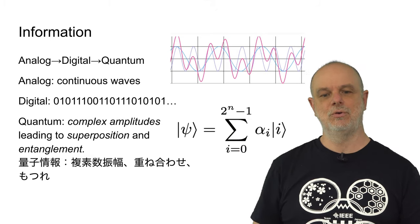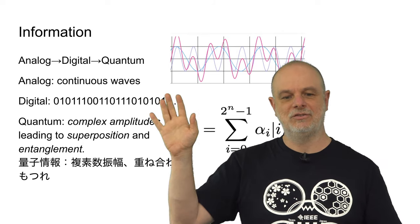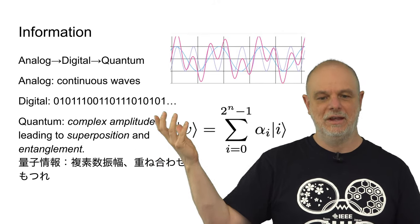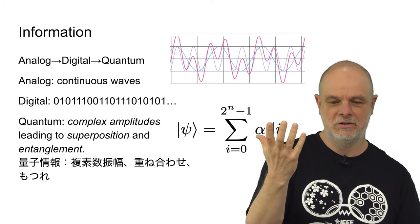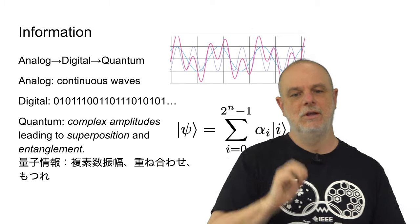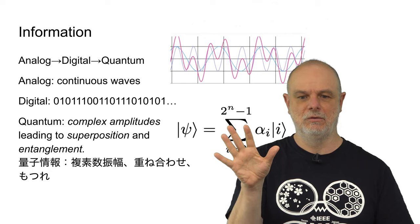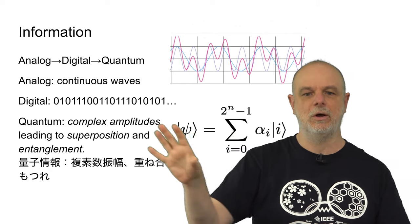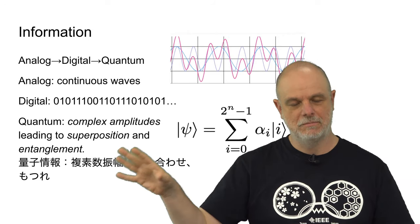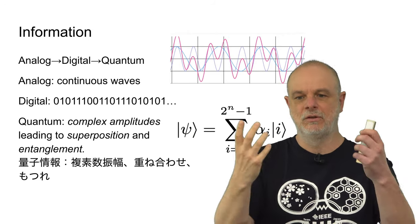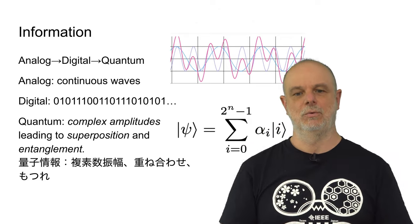And then there are quantum computers and quantum information, in which the information that we deal with is actually a set of complex amplitudes that help us build on techniques called superposition and on entanglement. And using that, we can process information. So, there are these three major paradigms, the analog, the digital, and the quantum. And what I want you to understand is that in the environmental world, environment and information, we are talking about the combination of those, the interaction of those devices and that information with the real world.